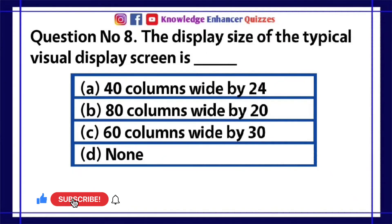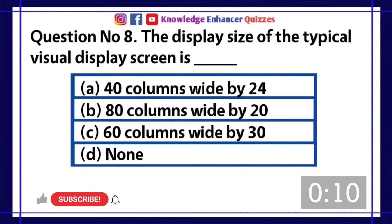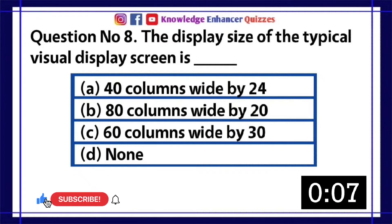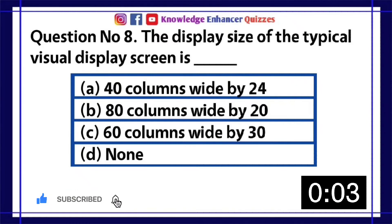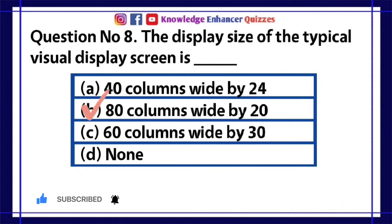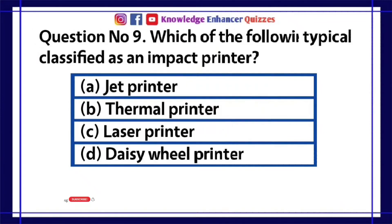Question number 8. The display size of the typical visual display screen is dash. A. 40 columns wide by 24. B. 80 columns wide by 20. C. 60 columns wide by 30. D. None. Option B is the right answer.